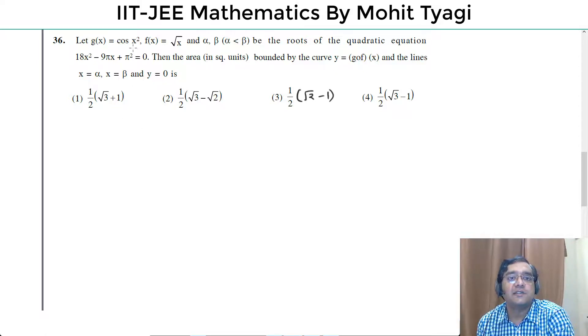This question says let g(x) equals cos(x²), f(x), and alpha and beta are the roots of this quadratic equation.